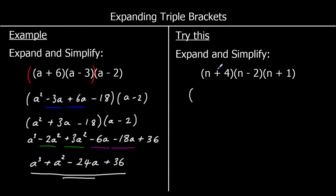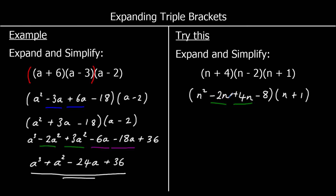So n times n is n squared. n times negative 2 is negative 2n. And we've got 4 times n, which is 4n. And 4 times negative 2 is negative 8. And (n + 1) is still on the end as the third bracket. So let's collect like terms: negative 2n plus 4n is 2n. So that's n squared plus 2n minus 8 times (n + 1).